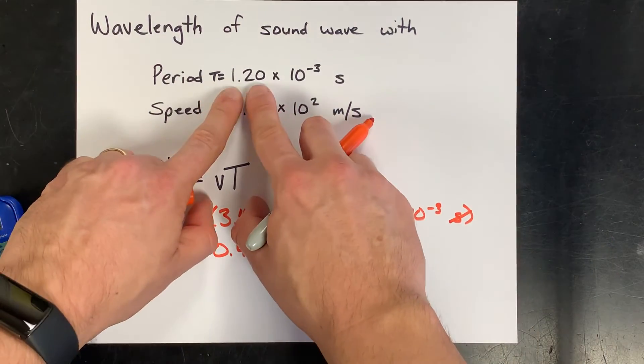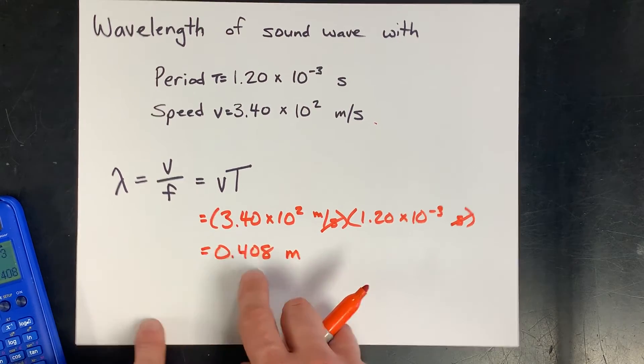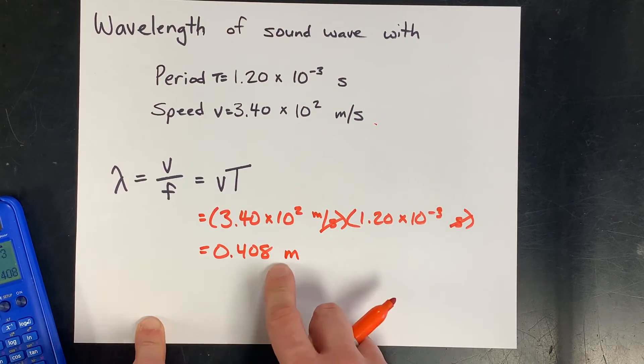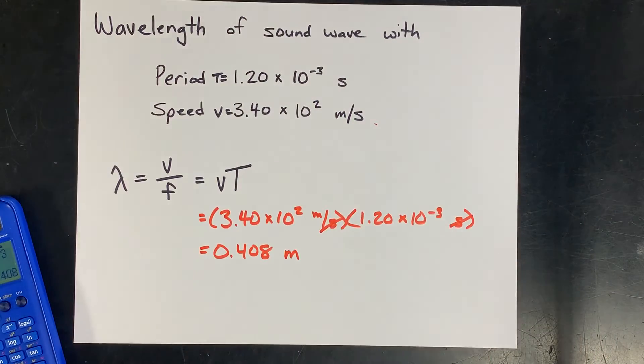Now for sig figs, we have three significant figures here, three here, and we happen to have three in our answer. So the wavelength is 0.408 meters. Hey, thanks for being with me and best of luck.